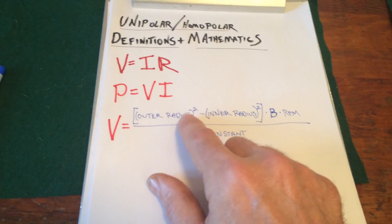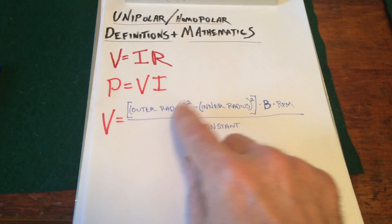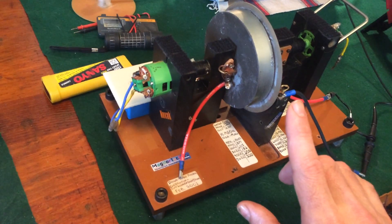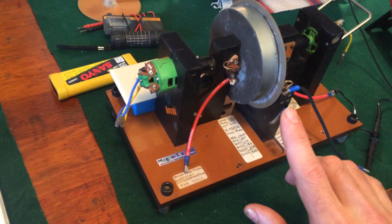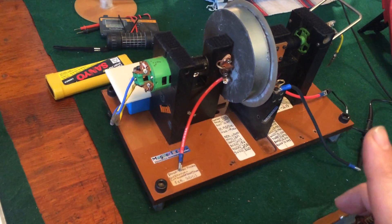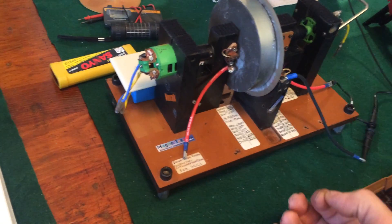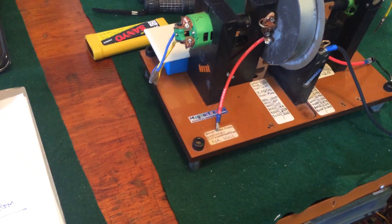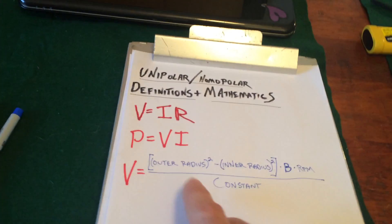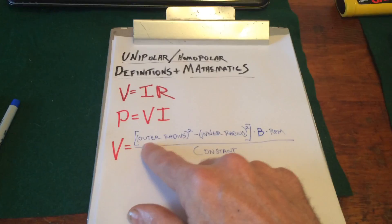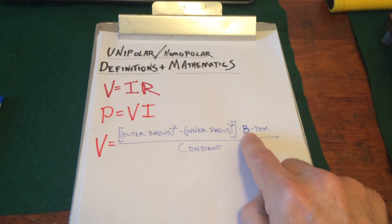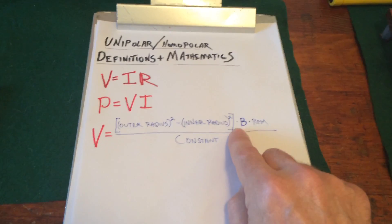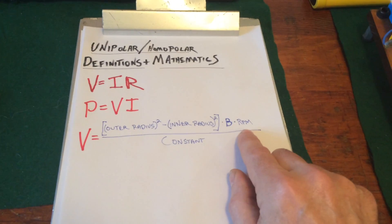So let's look at this again: outer radius squared minus the inner radius squared. This is a function of the radius squared. So if the disc was to double in radius and diameter, you would also multiply the voltage by a factor of 4. If you triple the radius, you're going to multiply the voltage — at a given speed, at a given field strength — by a factor of 9. The radius is very important in dictating the voltage. The voltage goes up with the square of the radius, but linearly with respect to the field strength and linearly with respect to the RPM. So you double the field strength, you double the voltage; you double the RPM, you double the voltage.